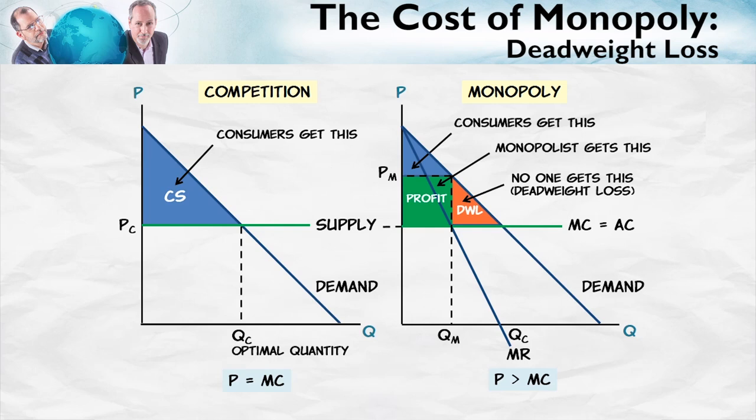Think of a movie theater that is half empty. Surely there are some people out there who would value watching the movie at more than its marginal cost — about zero. So why doesn't the movie theater lower the price to these people? Because to do so, it would have to lower the price to everyone, and that would reduce total profits.